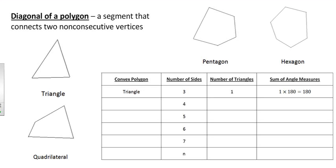A few things we're going to have to know here to get started. First of all, you're going to need to remember what the sum of the measures of the interior angles of a triangle add up to — that was a theorem we had way back towards the beginning of the year. Any triangle's angles always add up to 180 degrees, so angle 1 plus angle 2 plus angle 3 equals 180 degrees.